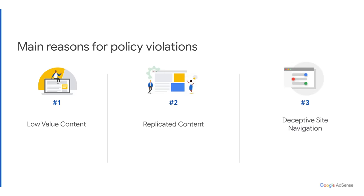The third and last main violation is site navigation. Users need to be able to easily navigate your site. This can be achieved by categorizing your content, using menu bars, and so on. Keep in mind that we may review all pages of your site and not just the sign-up URL where you place the ad code. That's why it's very important to make sure each page has valuable content that is not repetitive and is easy to navigate.